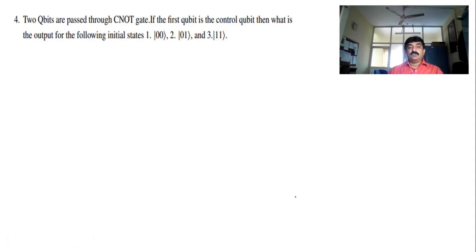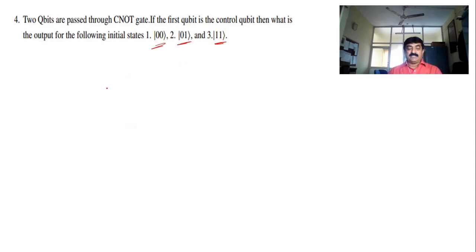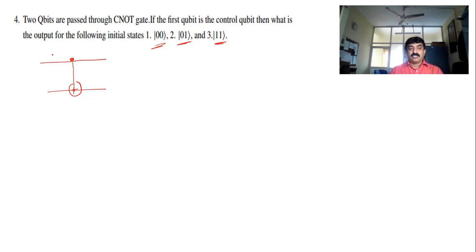Let us move on to the next question: two qubits are passed through a CNOT gate. If the first qubit is the control, what is the output for the initial states |00⟩, |01⟩, and |11⟩? You can solve this two ways: by the circuit symbol or by the matrix form. In the circuit symbol approach, the control is active only when it is in state |1⟩ and inactive if it is in state |0⟩. For input |00⟩, control is 0 — it does not act on the target — so output is |00⟩.